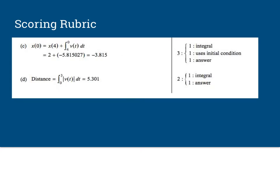Now you're asked to find the position of the particle at time t equals zero. Well, for this we're going to have the initial position plus the integral of the rate of change from 4 to 0 of velocity to time. And so when you do that, you get negative 3.815. Now notice this is pretty nice. You're given one point for the correct integral, one point for including the initial, and then the third point for the correct answer.